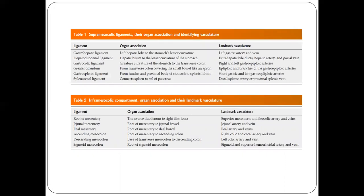The peritoneal cavity is divided into two major compartments: the supra-mesocolic and infra-mesocolic. The supra-mesocolic compartment is mainly formed by multiple ligaments, while the infra-mesocolic compartment includes the mesentery and the mesocolon.